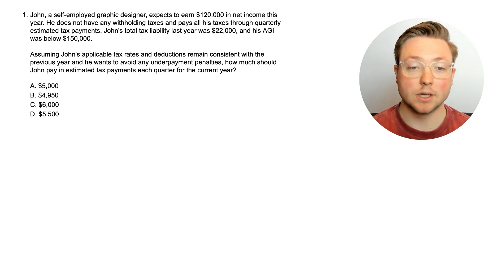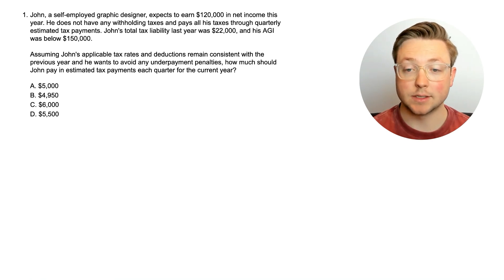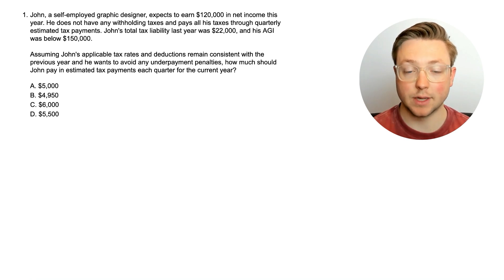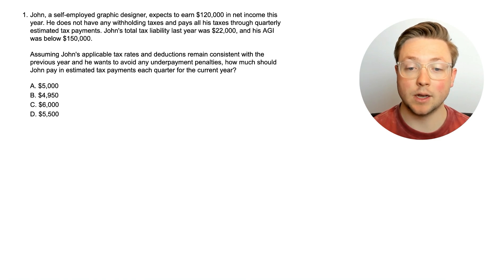Here is question one. John, a self-employed graphic designer, expects to earn $120,000 in net income this year. He does not have any withholding taxes and pays all his taxes through quarterly estimated tax payments. John's total tax liability last year was $22,000, and his AGI was below $150,000. Assuming John's applicable tax rates and deductions remain consistent with the previous year, and he wants to avoid any underpayment penalties, how much should John pay in estimated tax payments each quarter for the current year?